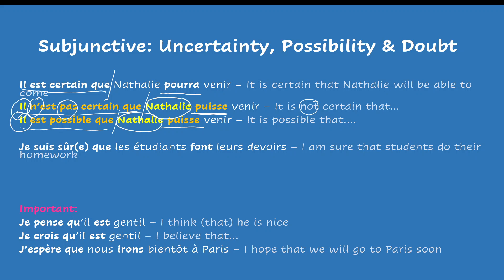I am sure that students do their homework. Here, I am sure — there is no doubt, it's not uncertain. Therefore, you will use the indicative. We're using the present tense because in the first clause there is no doubt, there is no uncertainty. You are sure.